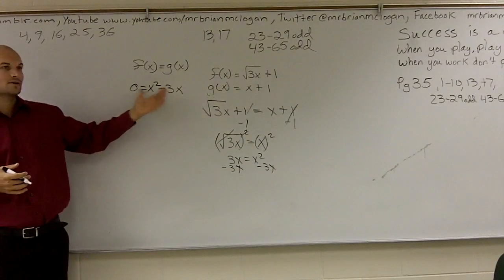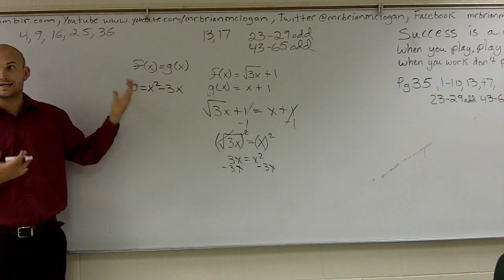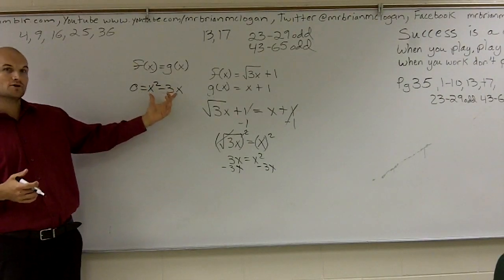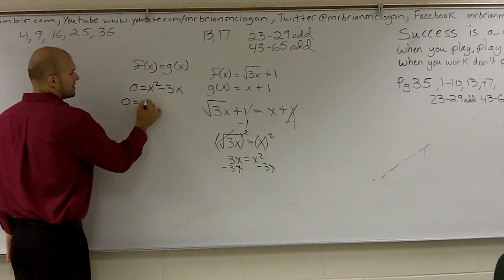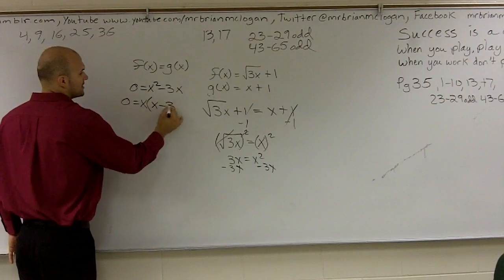So now what I can do is I can look at this and I say, all right, well, I still don't know what x is, right? I need some way to go and factor this out. So I notice that they both share an x. So what I'm going to do is factor out an x. So therefore I have 0 equals factor out an x. And we have x minus 3.